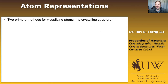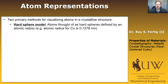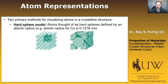Before we launch into talking about the face-centered cubic structure, I want to make some brief comments about how we represent atomic structures. There are two primary ways we visualize atoms in a crystal structure. The first is called a hard sphere model, where we assume that atoms are defined by some atomic radius — for example, the atomic radius for copper is 0.1278 nanometers. We assume the atom is a hard sphere, and they pack tightly together.